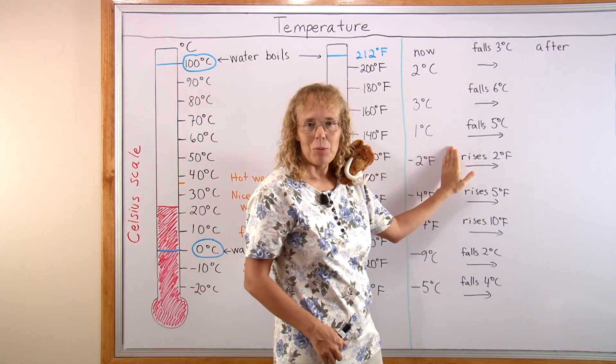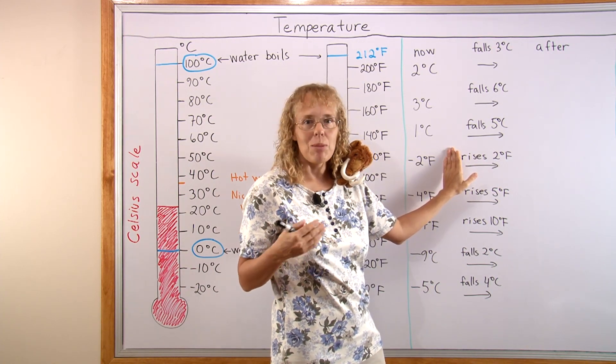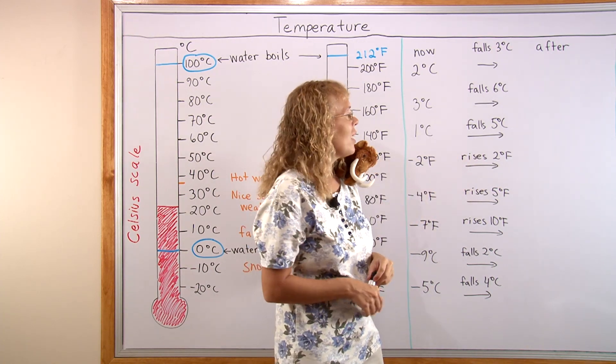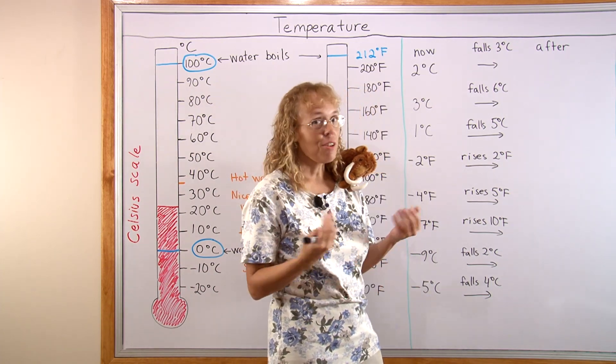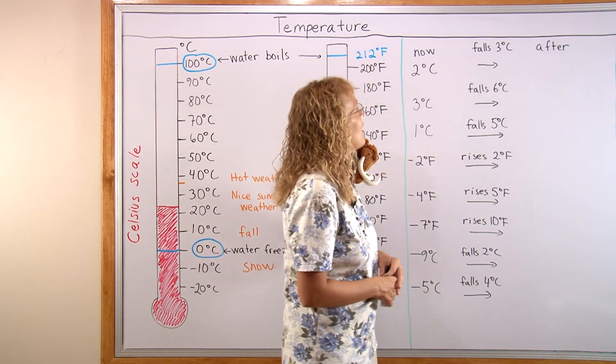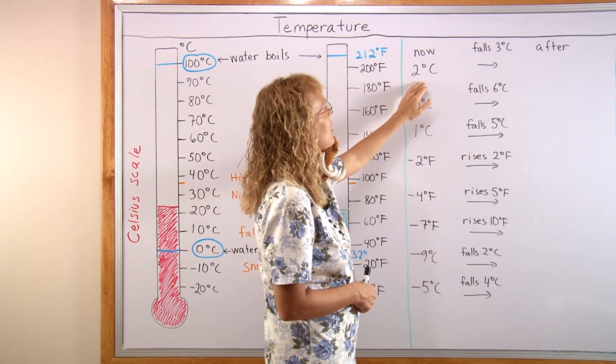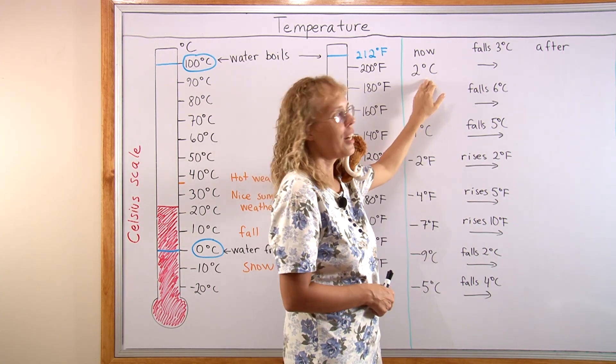Now we are going to study integers, negative numbers, using temperature and thinking of temperature falling and rising. Even fourth graders, third graders can easily understand that. Let's say for example that the temperature is 2 degrees Celsius and it is chilly weather.